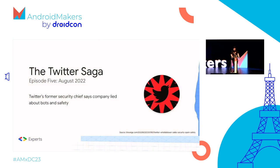Again with the Twitter saga — Twitter's former security chief says the company lied about bots and safety. Legendary hacker Peter Mudge Zatko was let go from the company because he tried to fix things. This added to the controversy of the potential purchase and things got a bit muddy.